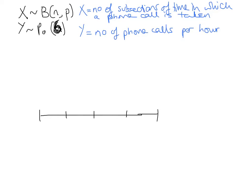I've split the time up into these four 15 minute intervals, and a success is getting a phone call. So this is a binomial with n=4. And from my Poisson, which is the number of phone calls per hour, I expect 6 overall. So in each 15 minute period I'm expecting 3 over 2. I might get a phone call here, here, and there. So x is 3.